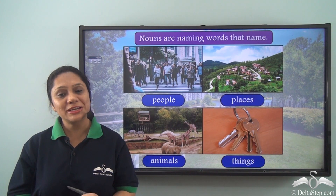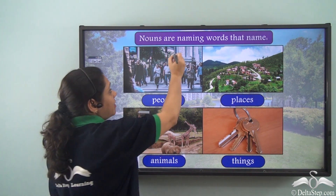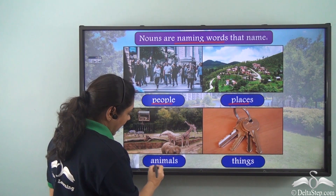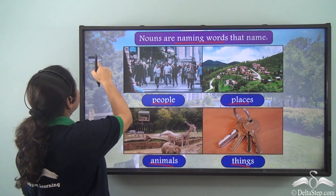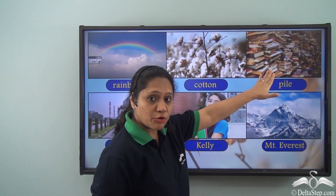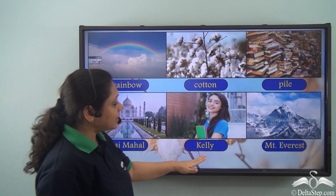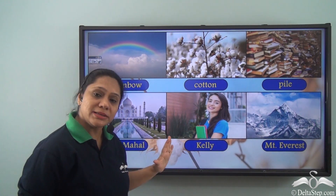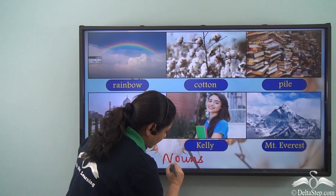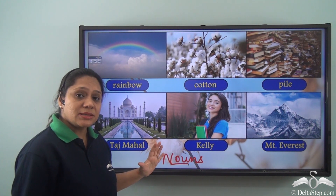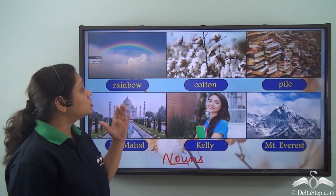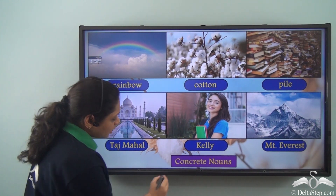We have learnt about nouns in great detail and we know that nouns are naming words that name people, places, animals or things. Now read the words given here: Rainbow, cotton, pile, a pile of books, Taj Mahal, Kelly, Mount Everest. All these words are naming words so they are nouns, and all these words name things which are concrete — which you can either see or touch. So these are all concrete nouns.